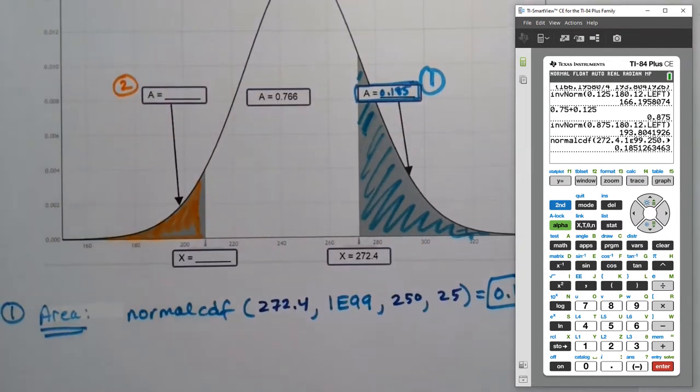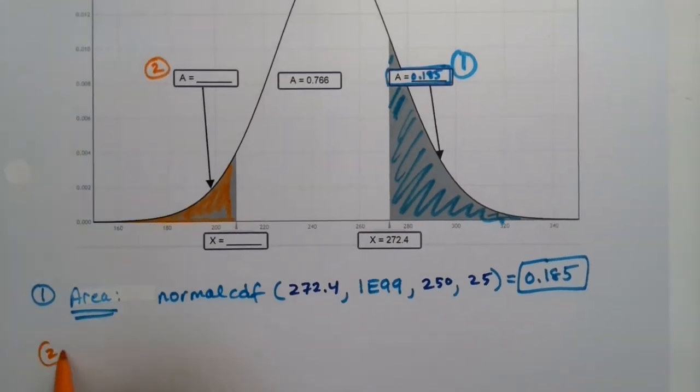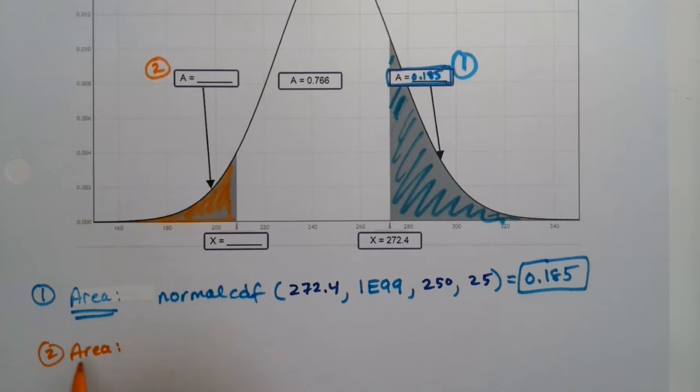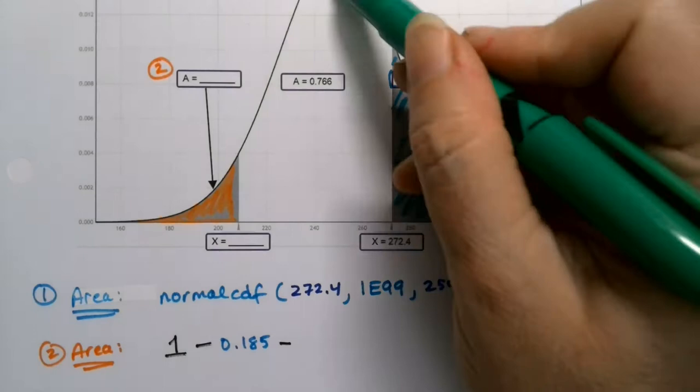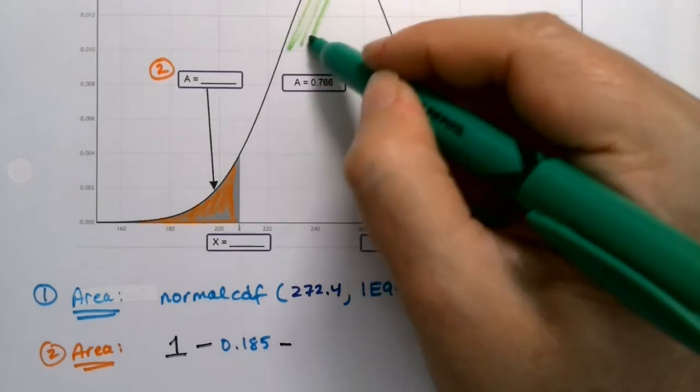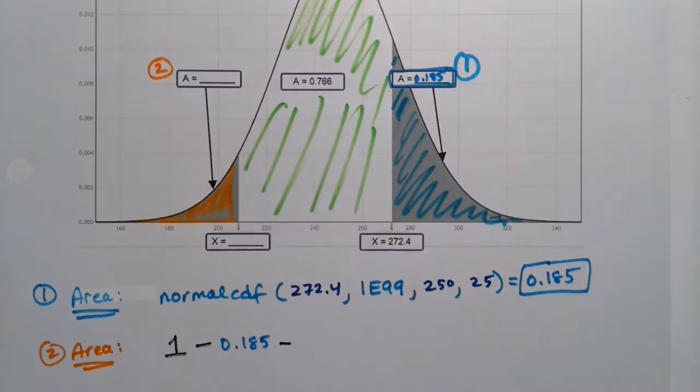Now, how am I going to do that? Well, remember, the whole curve makes one, right? So that area right there would be one. Take away the 0.185. Also take away that middle zone, which I guess I'll shade green for myself. Right? So that middle zone is 0.766, so I'm going to take that away also.